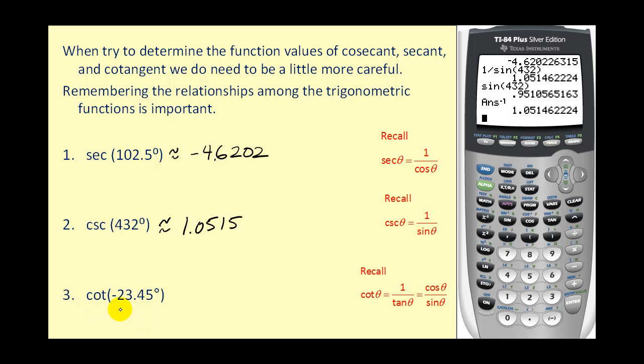And lastly, we come to the cotangent of negative 23.45 degrees. Remember that cotangent theta equals 1 over tangent. This would work, or we could also use cosine theta divided by sine theta. I'm going to use 1 divided by tangent theta to find the cotangent of negative 23.45 degrees. Remember, you have to use the negative key. You can't use the minus key for the negative, or you'll get an error. Press enter, and there's our approximate value.